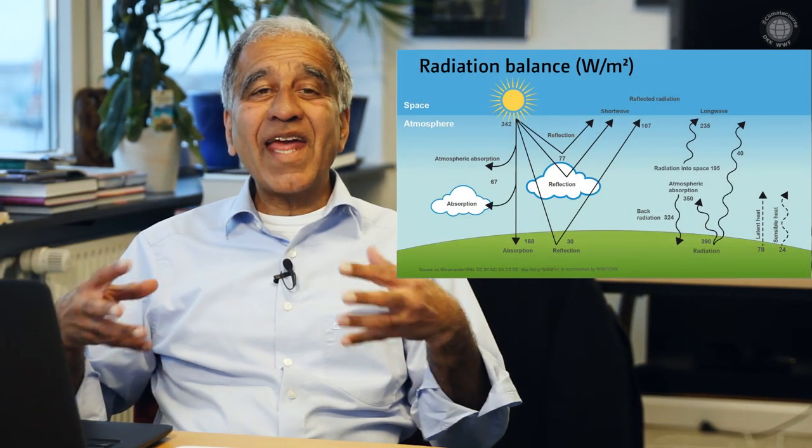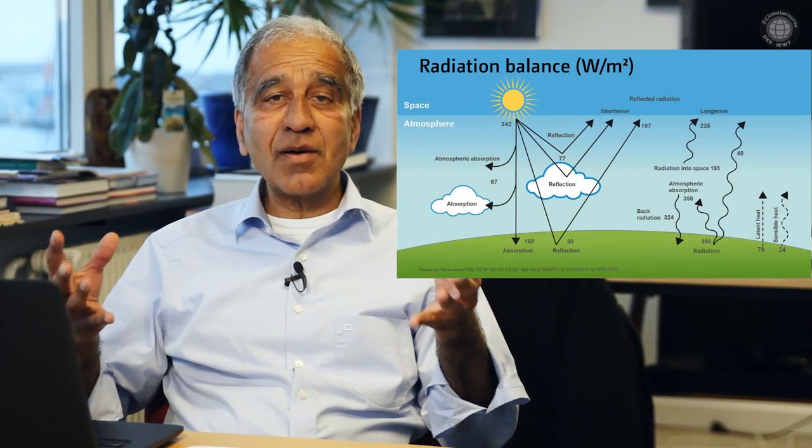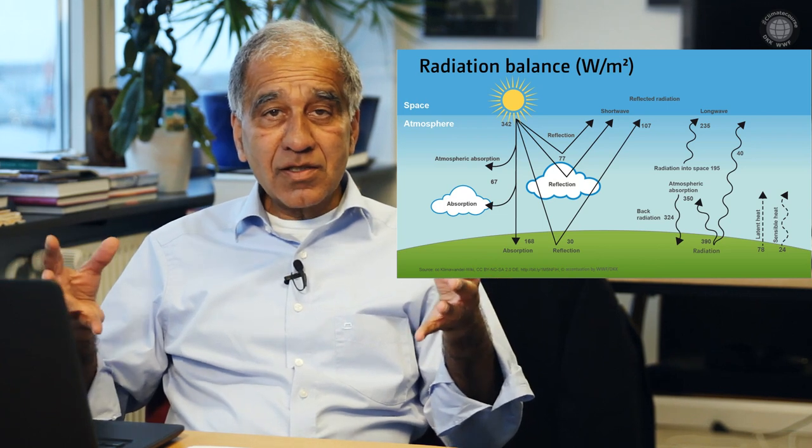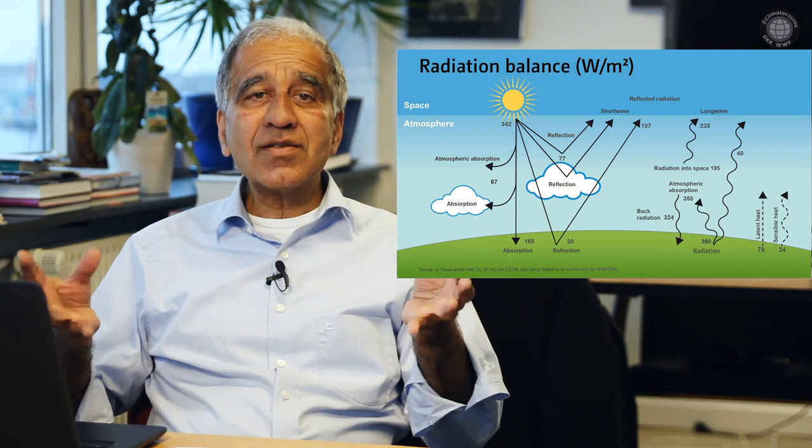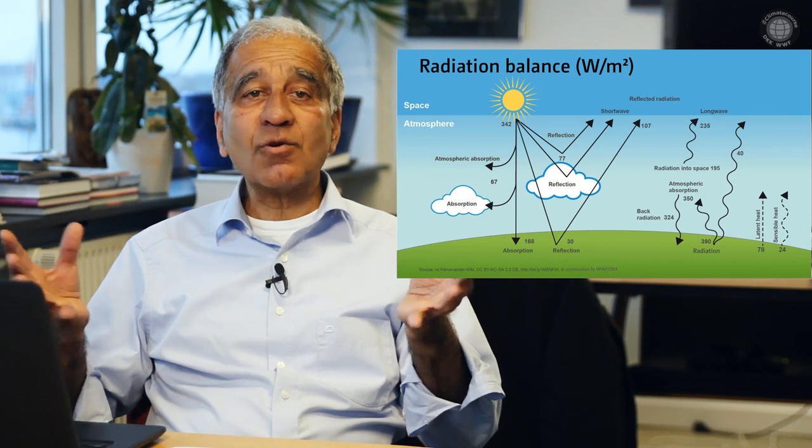Let's take a closer look at these processes. Here we have a diagram that shows the so-called energy fluxes in some more detail. This is what we call the radiation balance. The units are watts per meter squared.